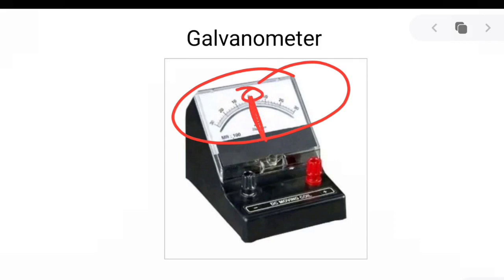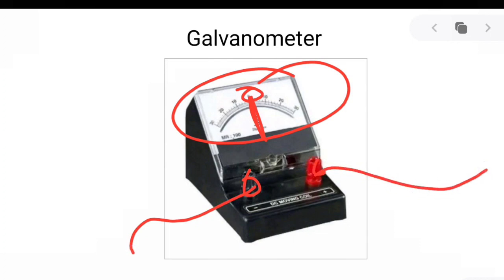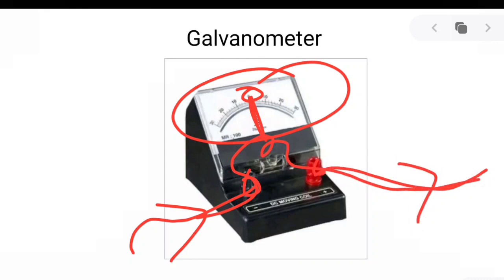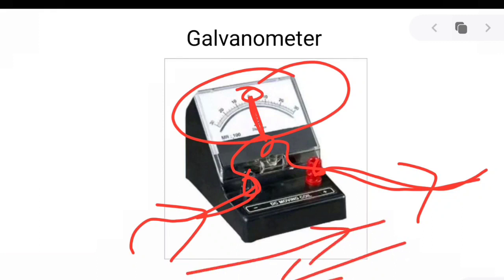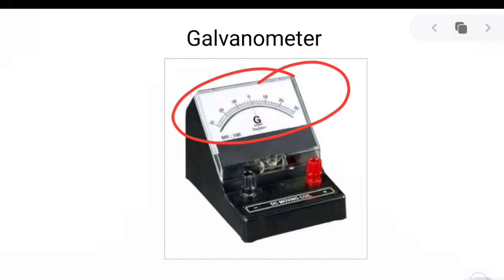When the current flows in the circuit, one connection is between this terminal and the other connection is from this terminal. The current enters, goes to the galvanometer, and then flows out. Depending upon the direction of current, whether it is flowing in this direction or the opposite direction, the needle deflects in clockwise or anticlockwise direction. So the galvanometer is basically a sensitive device which is used to detect small current.